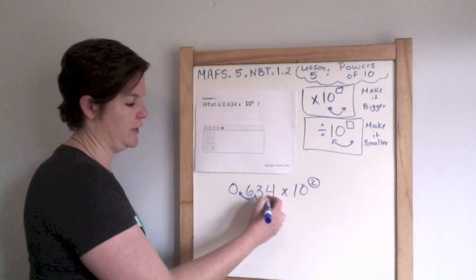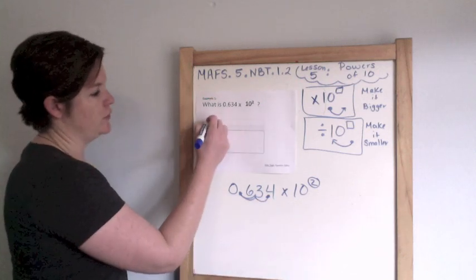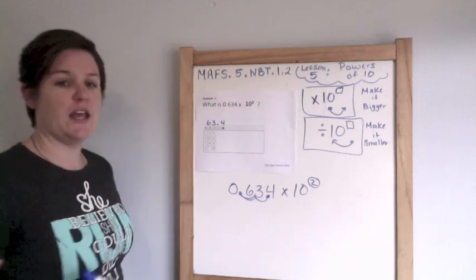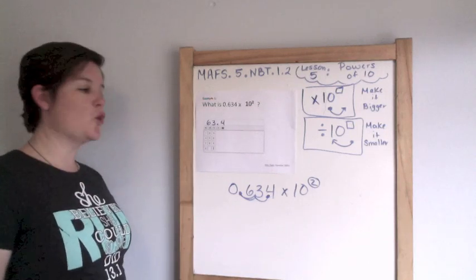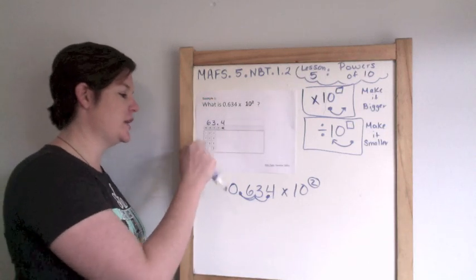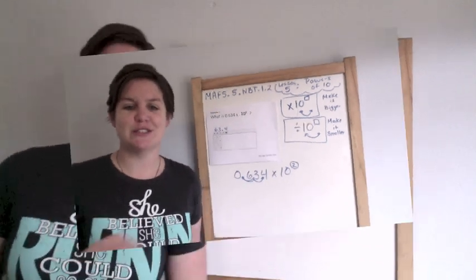One, two, there's where our decimal point is. So 63 and 4 tenths. In your equation editor tool, you would write 63.4, you'd be finished.